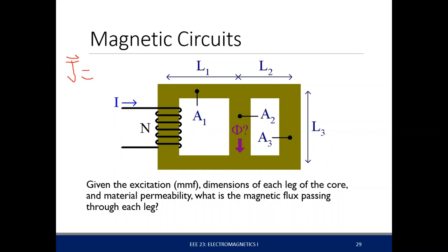The current density by Ohm's law is equal to sigma E. For our magnetic circuits, a magnetic field also creates some form of current — you have already encountered this. The quote-unquote current density within a magnetic field is — let's look at this diagram right here.